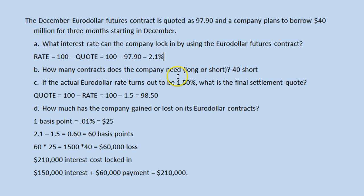If the situation had been reversed — they locked in 2.1 percent but the interest rate turned out to be 0.6 higher, or 2.7 percent — then they would have made $60,000 on the futures. Their actual interest cost would have been $270,000, but they would receive $60,000 from the contracts, ending up at $210,000. No matter what happened to the interest rate, they would end up paying the $210,000 they wanted to lock in.